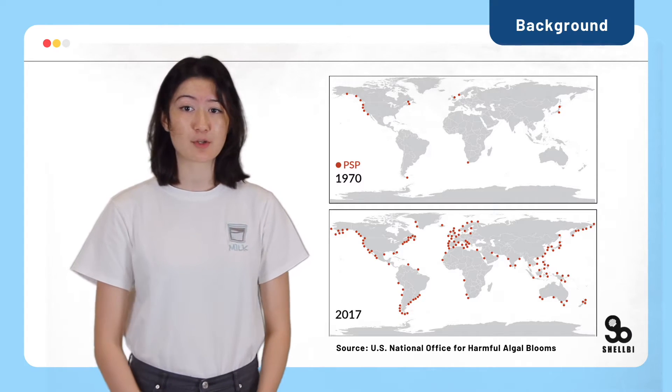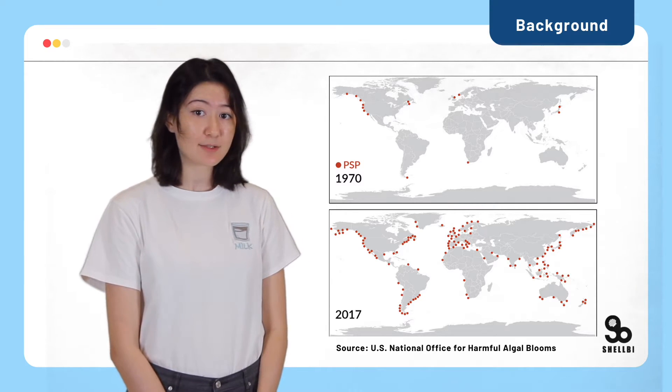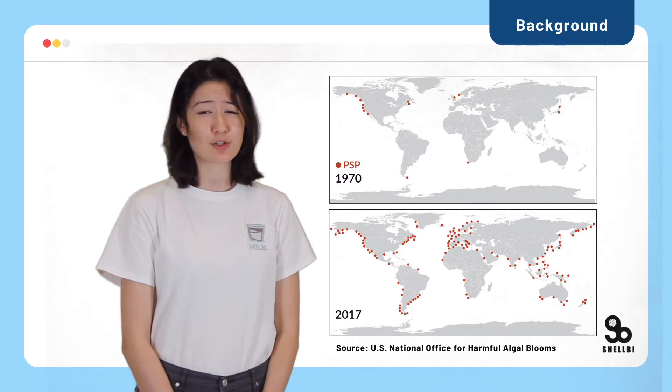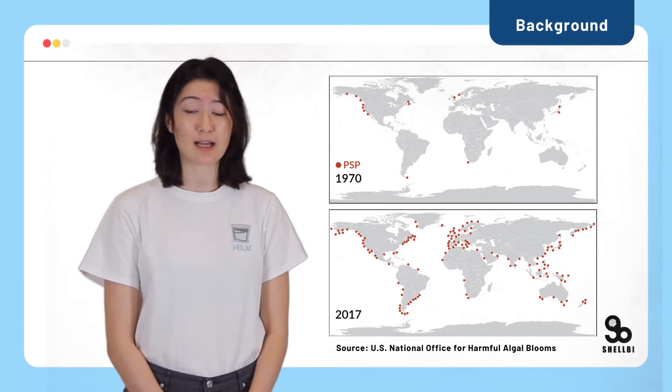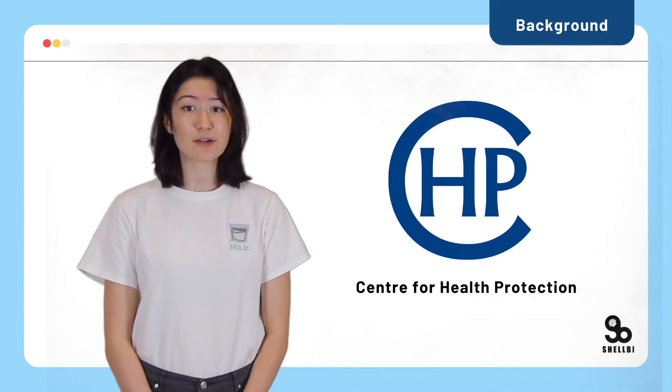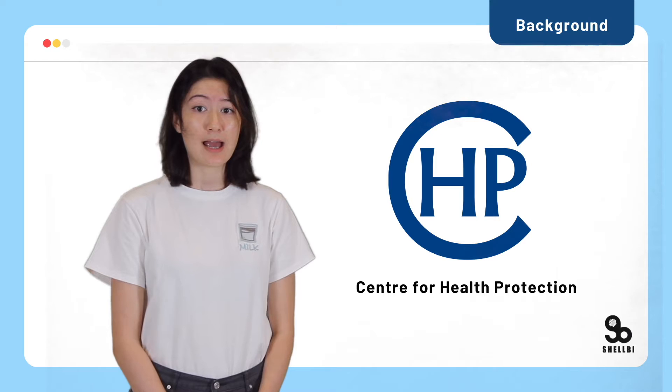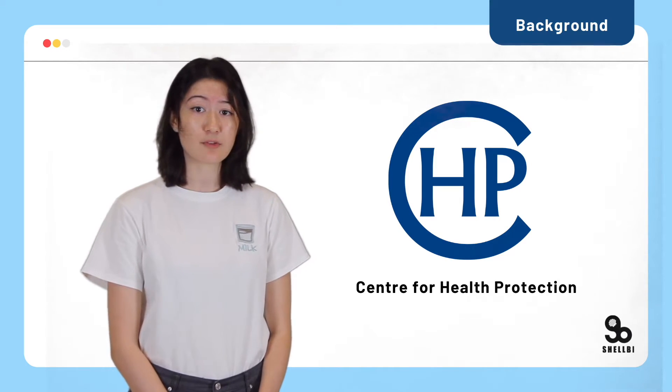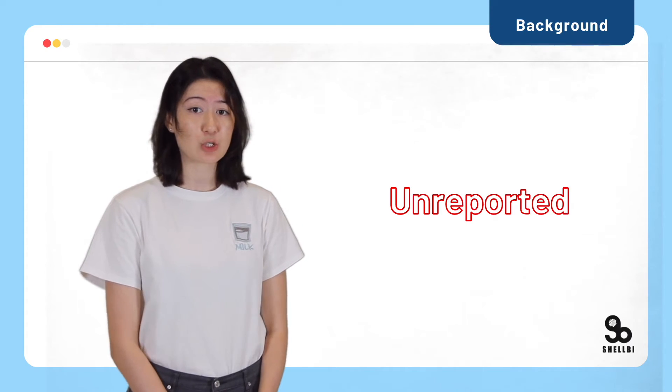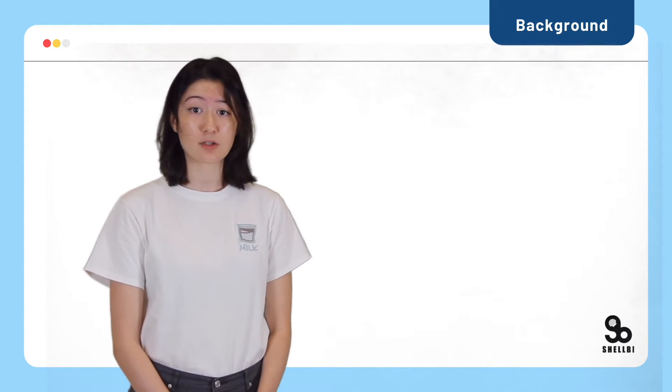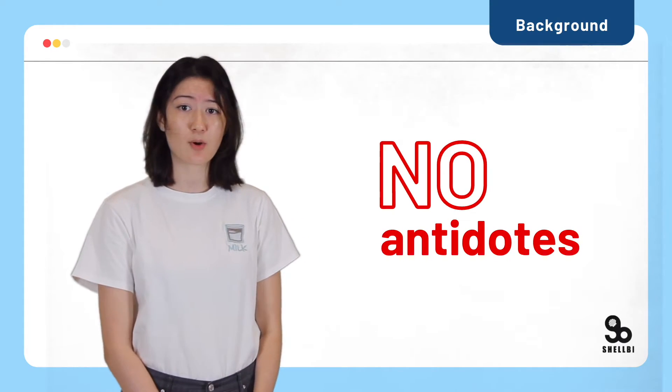The global distribution of PSP toxins significantly increased in the past 50 years. The fatality rate of PSP is very high, usually ranging from 15 to 50%, and affects young children and people in places with poorer access to healthcare the most. The Centre for Health Protection recorded 68 suspected shellfish toxin-related food poisoning by 2011, despite regular testing of shellfish consumed by humans. Many cases of PSP also go unreported as many assume it is a regular digestive issue. This is quite scary as there are currently no antidotes for paralytic shellfish poisoning, so the best thing we can do is to prevent it.